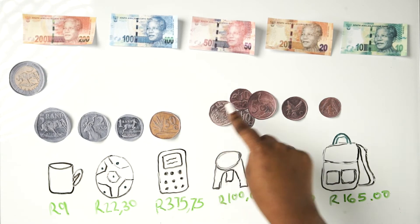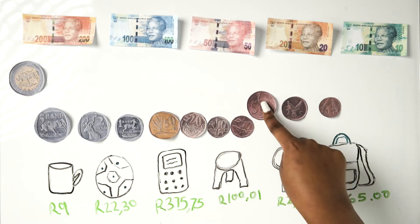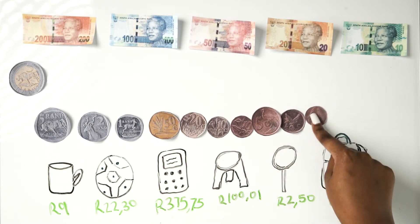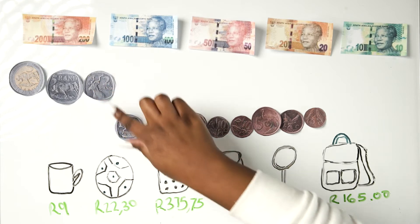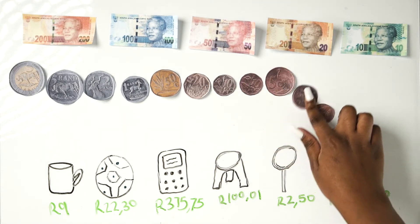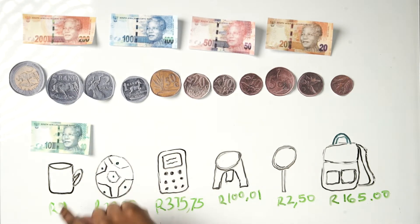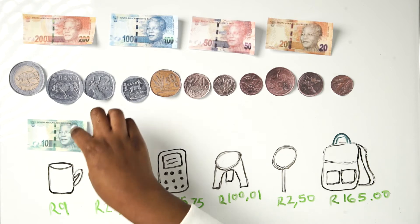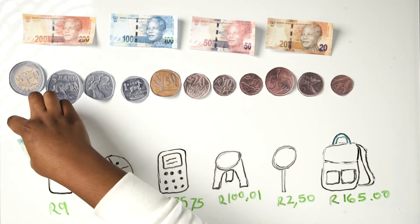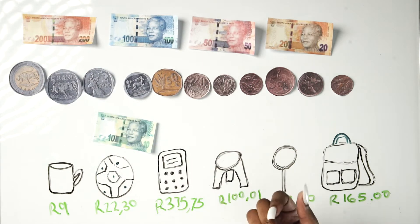This totals 8 rand 50, 8 rand 70, 8 rand 80, 8 rand 90, 8 rand 98 cents. You don't have an extra 2 cents. So what would you do? You'd rather buy using a 10 rand note, because 10 rand is above the amount the mug costs. So you would give whoever you're buying the mug from 10 rand.